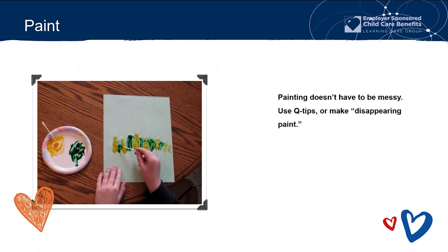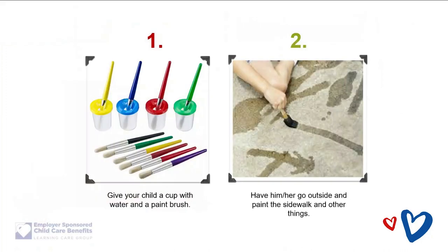Another one is disappearing paint. The materials you'll need: some cups, water, and clean paintbrushes. Give your child a cup with water and a clean paintbrush and have them go outside and paint the sidewalk or other things. Because it's water, it just disappears. So it's a non-messy, disappearing paint.